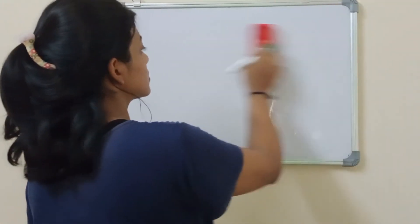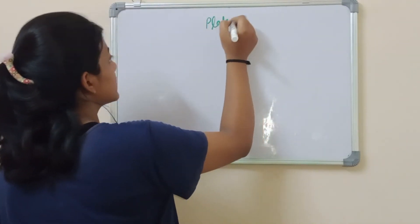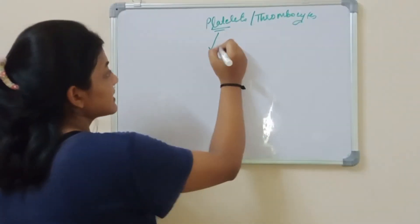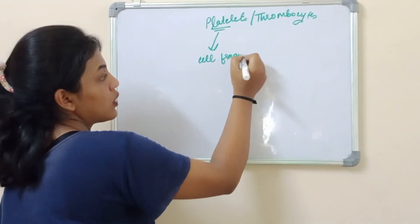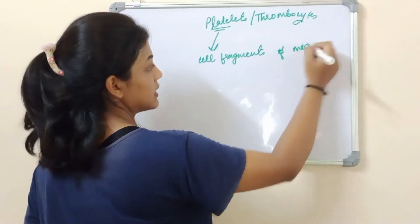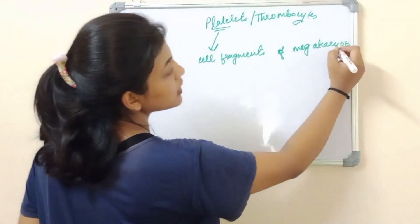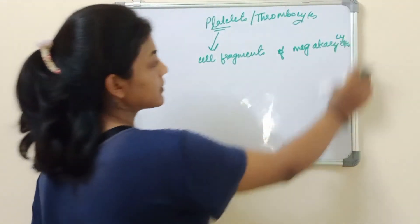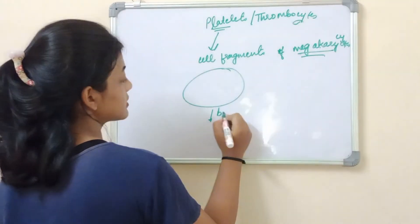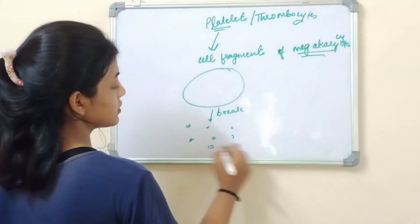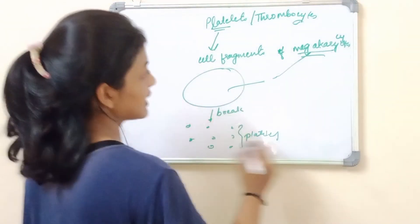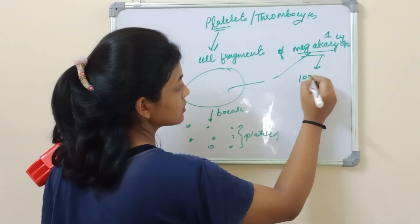Platelets, or thrombocytes, are basically cell fragments — not complete cells like RBCs and WBCs. They are cell fragments of megakaryocytes, which are large cells that break into small fragments known as platelets. One megakaryocyte can give rise to 1,000 platelets.